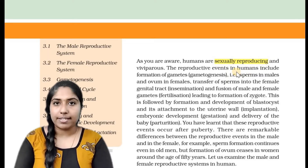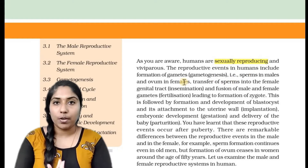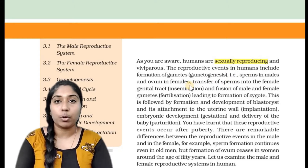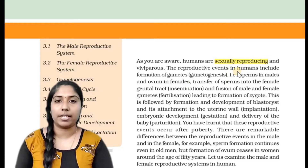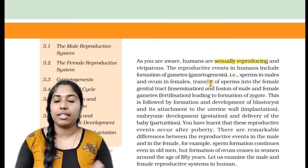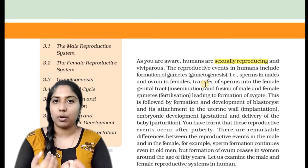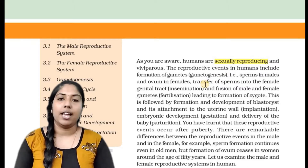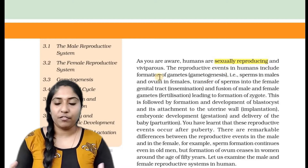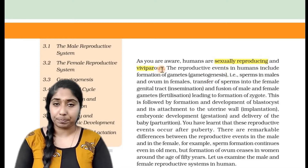What is sexual reproduction? It involves a male gamete and a female gamete. These gametes fuse together in the process of human reproduction.